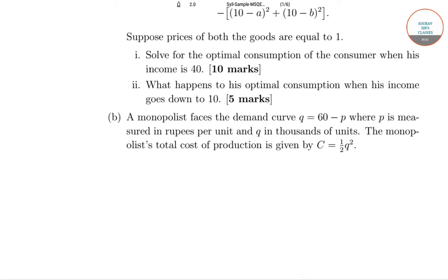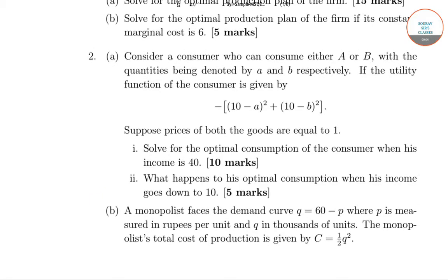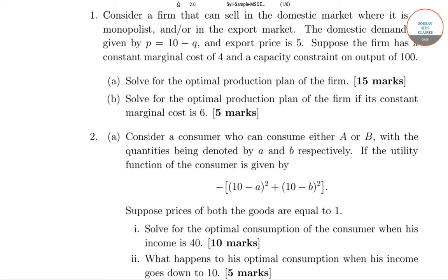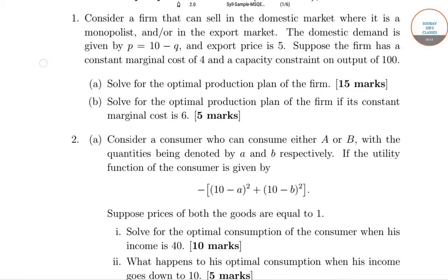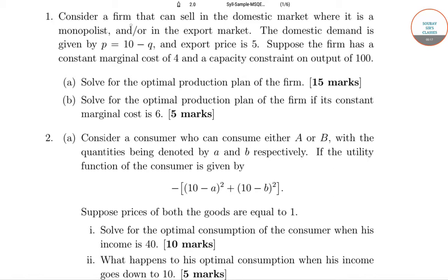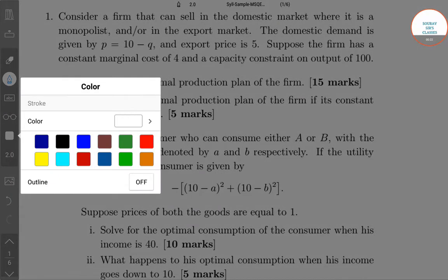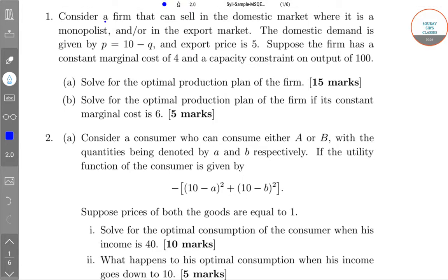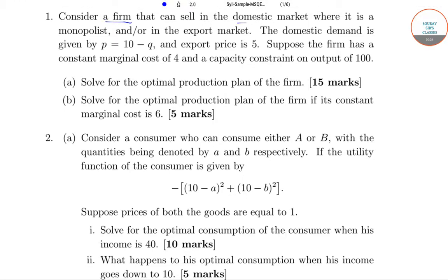Hello students, welcome to Short Obsessed Classes. In today's video we'll be solving a few questions from the MSQE entrance exam for economics. The first question goes like this: consider a firm that can sell in the domestic market where it is a monopolist, or in the export market. Domestic demand is given by P equals 10 minus Q, and the export price is given by 5.